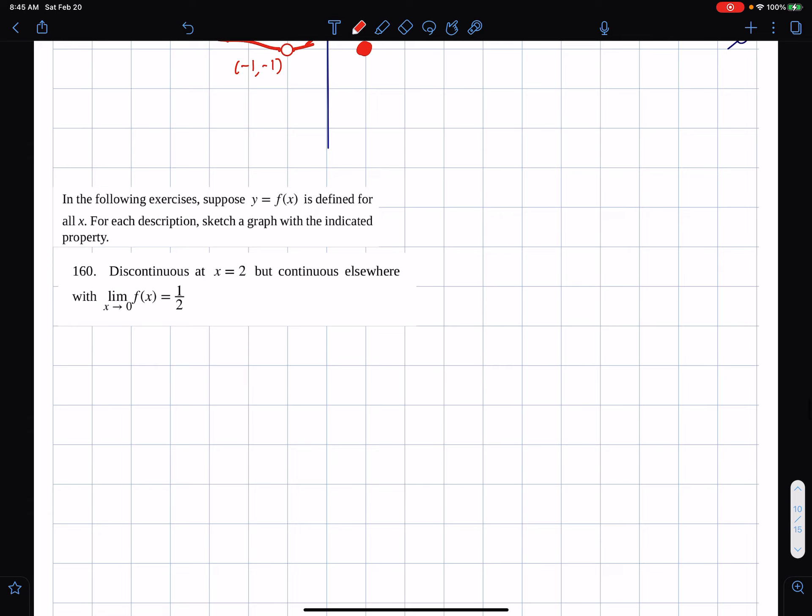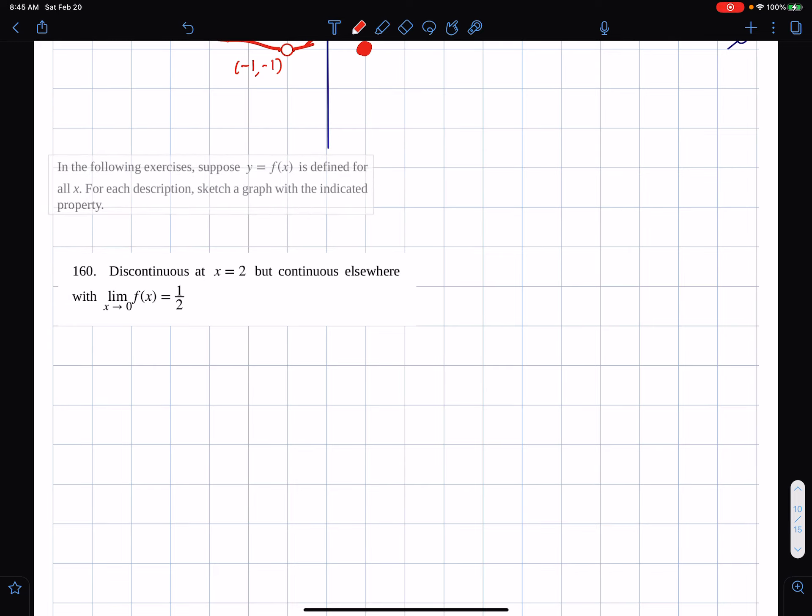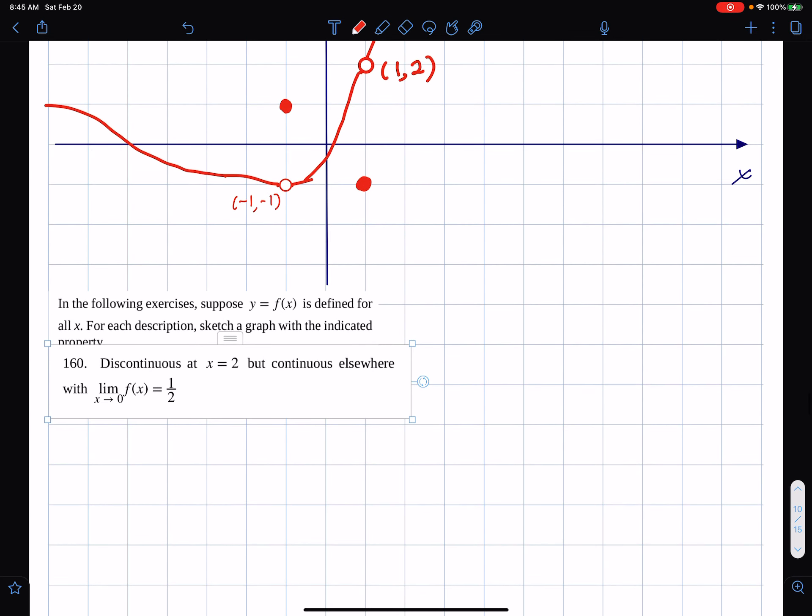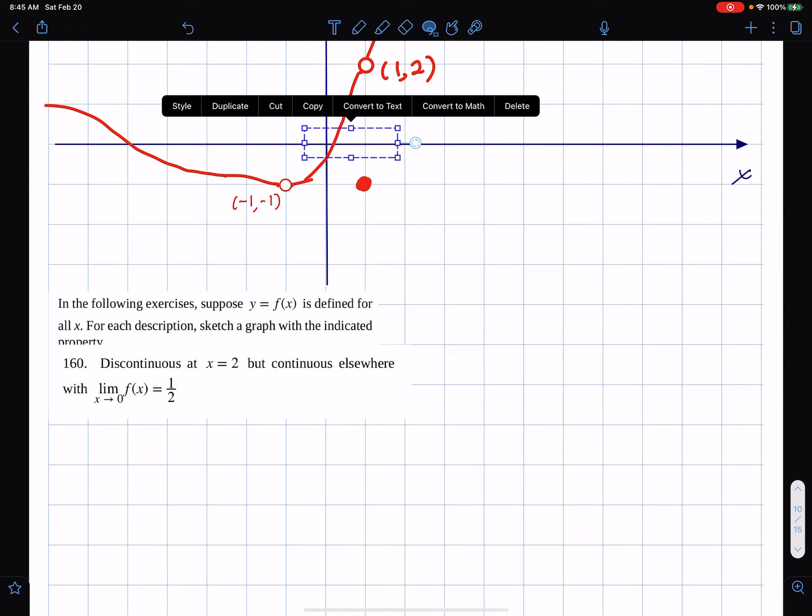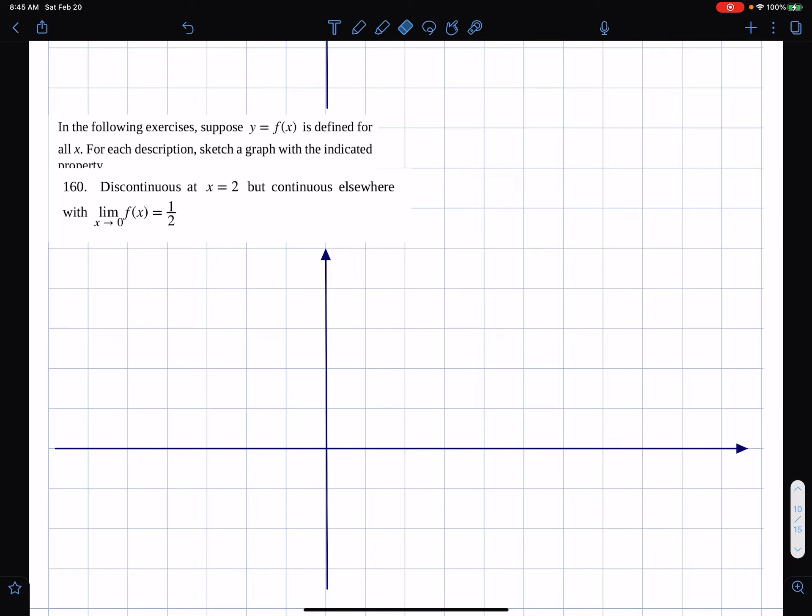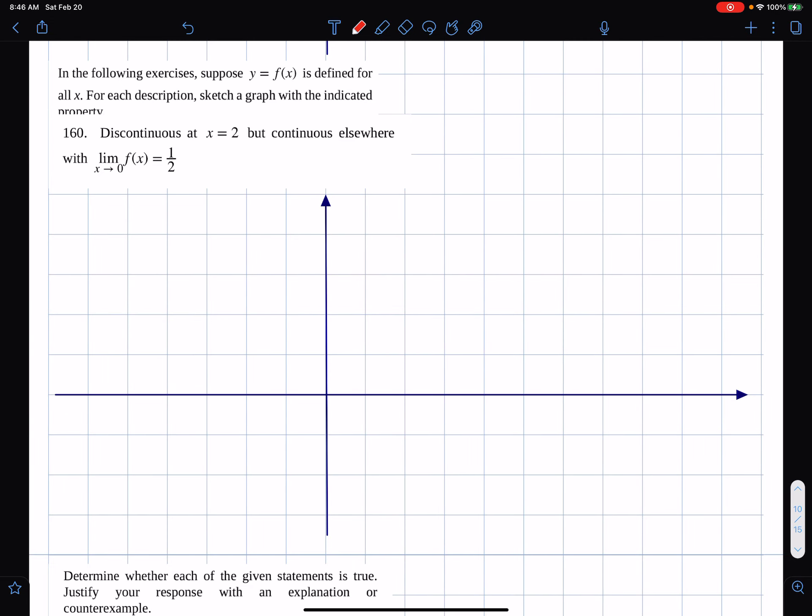And the following exercise is suppose that f of x is defined for all x. For each description, sketch the graph. First of all, I'm going to steal the xy plane so I don't have to redo that. Discontinuous at x equals 2, but continuous elsewhere. With limit as x approaches 0. So as x approaches 0, we have the limit 1 half. And it's continuous there. So I think it just looks like this, except it's discontinuous at 2.